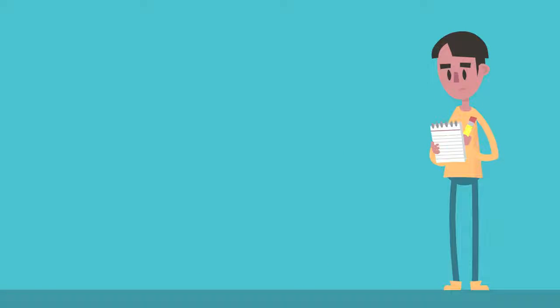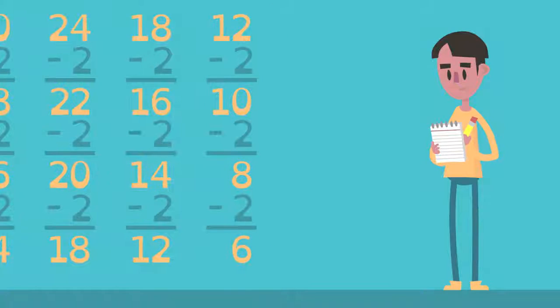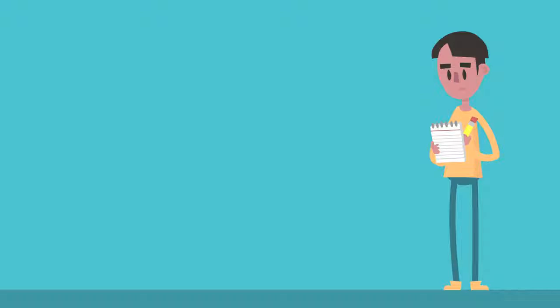He can find the answer through simple subtraction, 48 cups minus 2 each day until six cups remain. This method takes too much time. Is there a faster way? Yes!